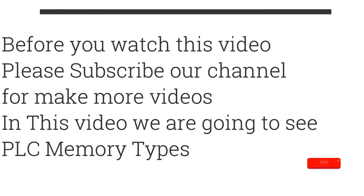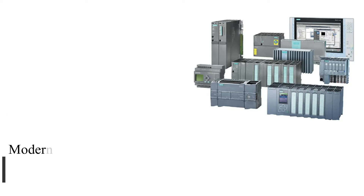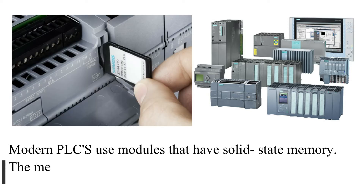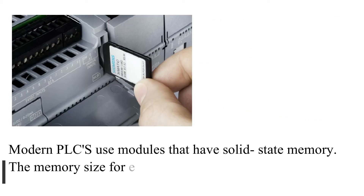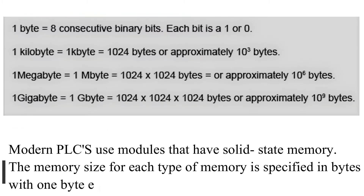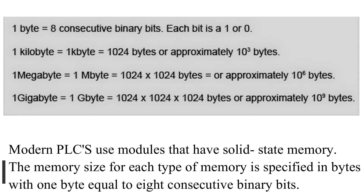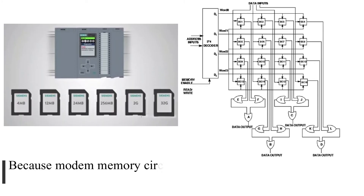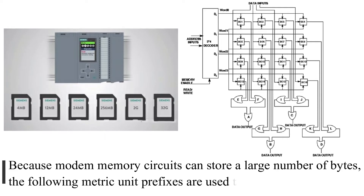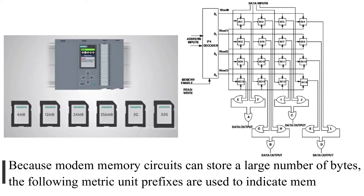In this video we are going to see PLC memory types. Modern PLCs use modules that have solid state memory. The memory size for each type of memory is specified in bytes, with 1 byte equal to 8 consecutive binary bits. Because modern memory circuits can store a large number of bytes, the following metric unit prefixes are used to indicate memory size.